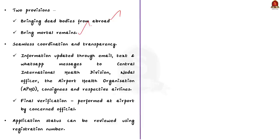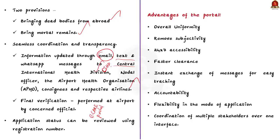The portal has two provisions — one for bringing dead bodies from abroad, and another for bringing mortal remains (ashes). It will ensure seamless coordination and transparency. Information will be updated through email, text, and WhatsApp messages to the central international health division, nodal officer, airport health organization (APHO), consignee, and respective airlines. The final verification of original documents will be performed at the airport by the concerned official. During this process, the application status can be reviewed in the e-CARE portal using a registration number. All stakeholders will be integrated through a common portal.